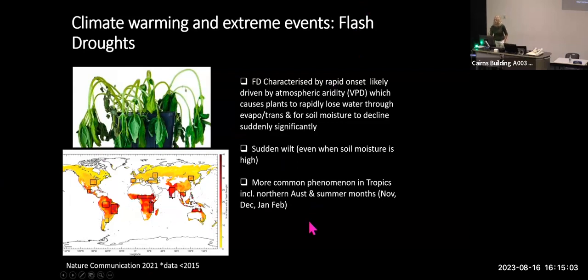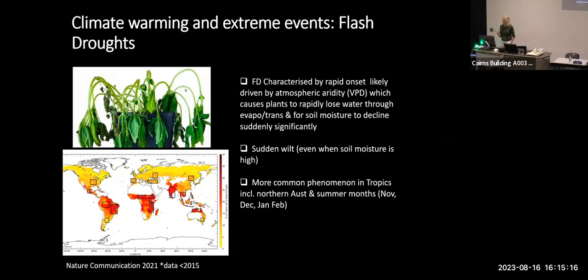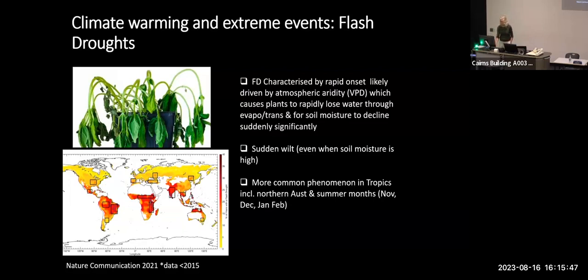Flash droughts are seen as a more common phenomenon in the tropics. When modelled globally, Northern Australia comes up as a potential hotspot for flash droughts - and this modelling was done pre-2015. More recent work suggests the droughts seen in 2018 were very likely similar to flash droughts. It's a phenomenon of the tropics and more likely to occur in summer months - our wet season months of November, December, January, February - when we get our hottest weather.